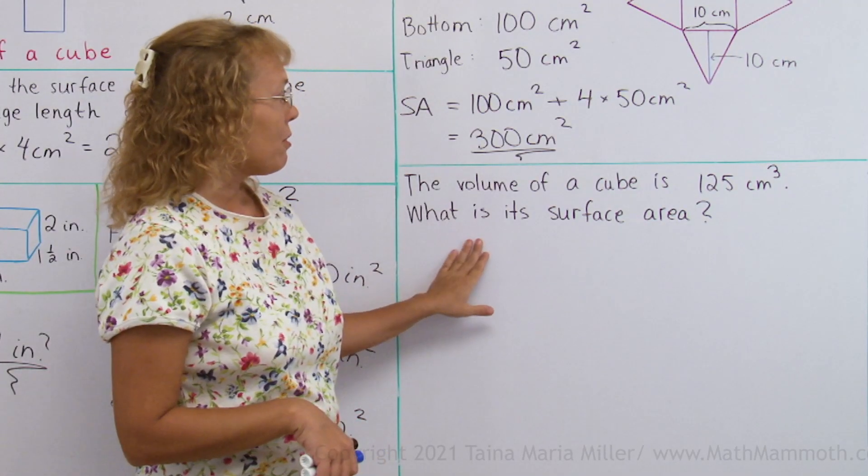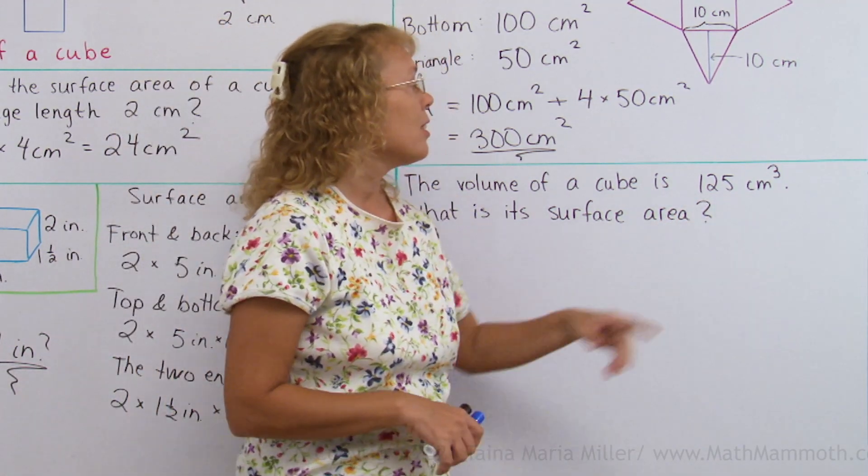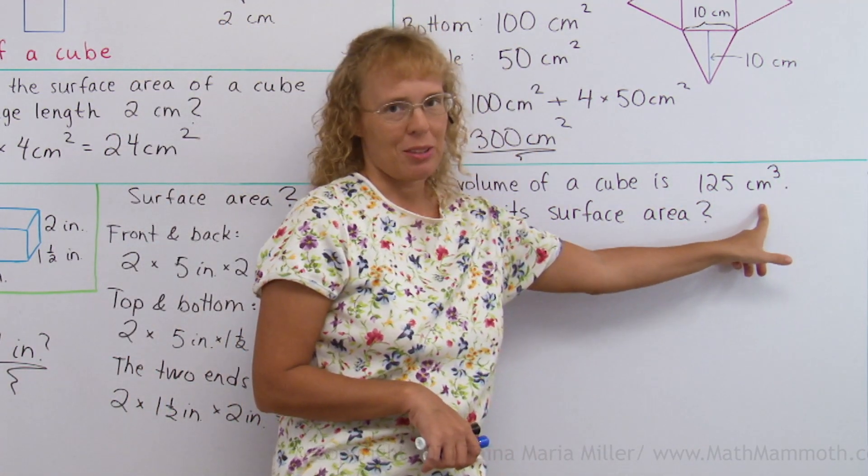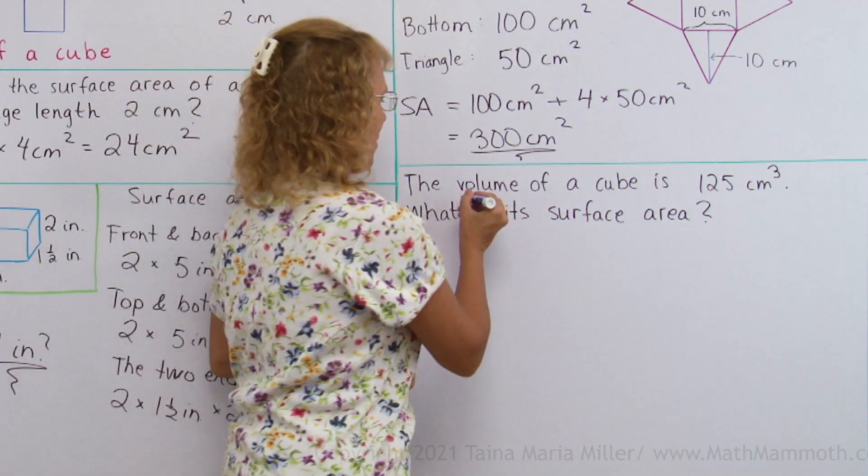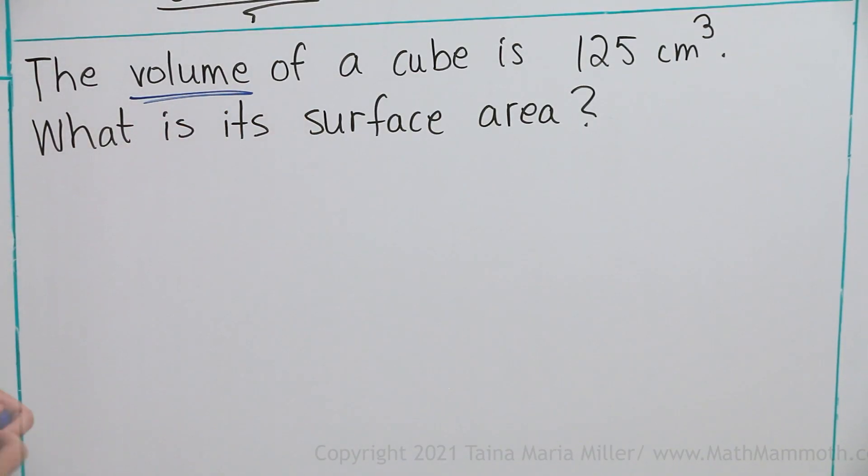The volume of a cube is 125 cubic cm. Notice it gives us the volume. What is its surface area?